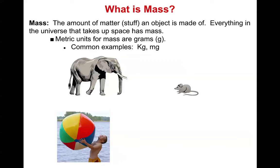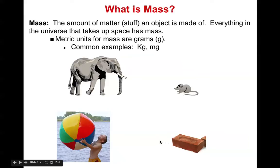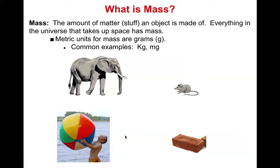Take a look at this little boy holding a pretty big beach ball — roughly his size — and compare it with something like a brick. You'd guess the brick is going to be heavier, and that's because the brick has more matter but it's just compacted down. The ball, even though it's much larger, has its matter more spread out. So the brick would have more matter even though it's smaller than the beach ball.